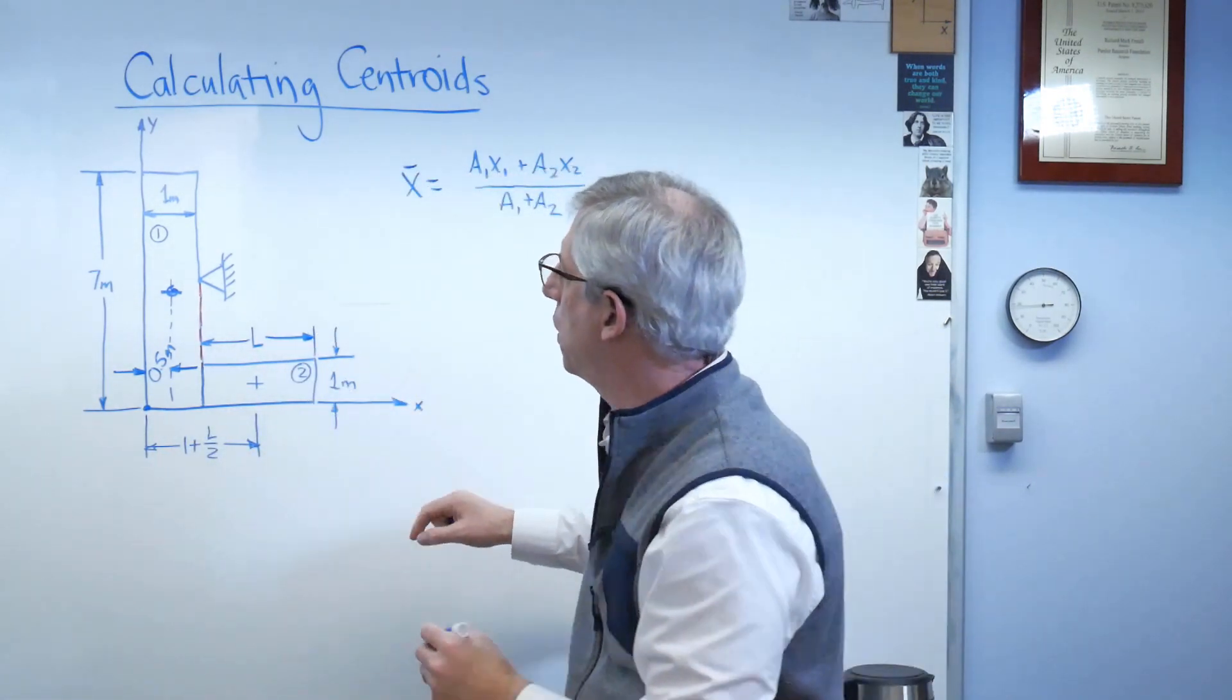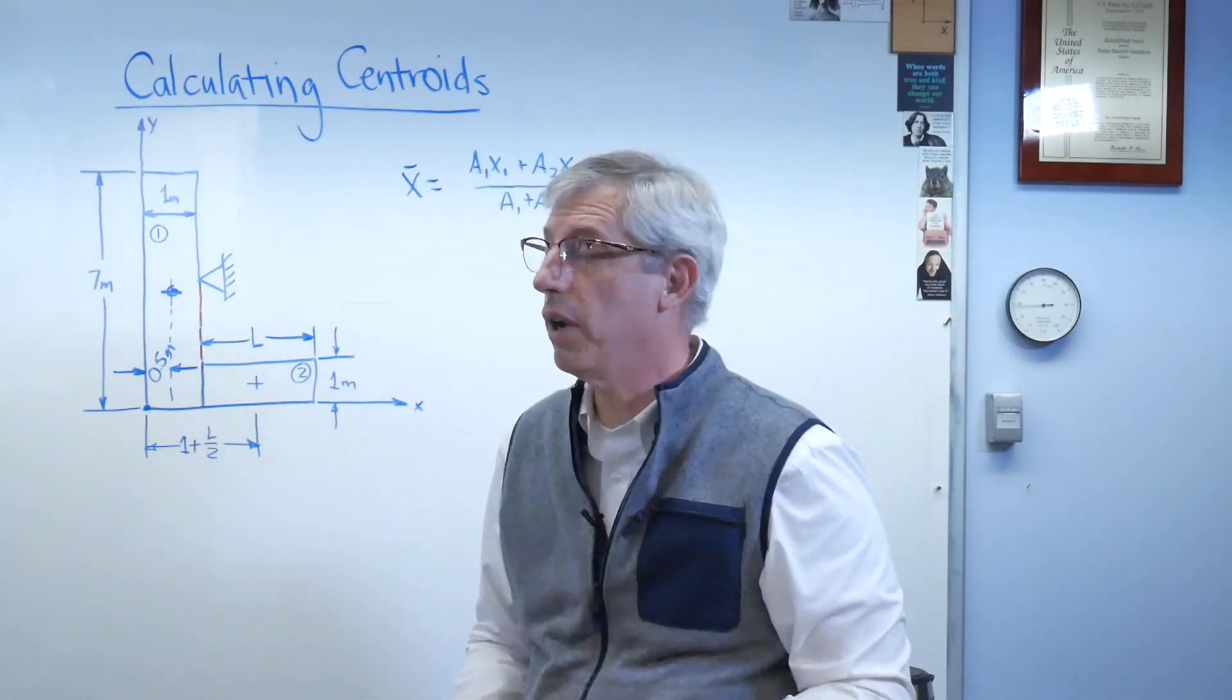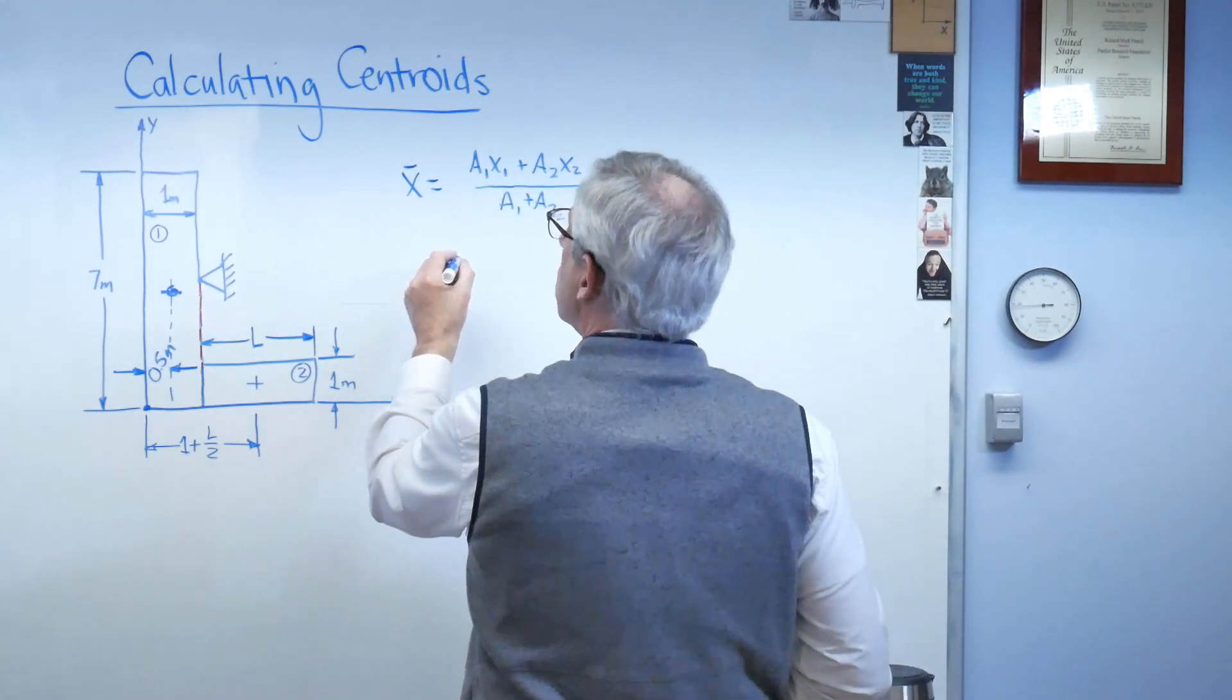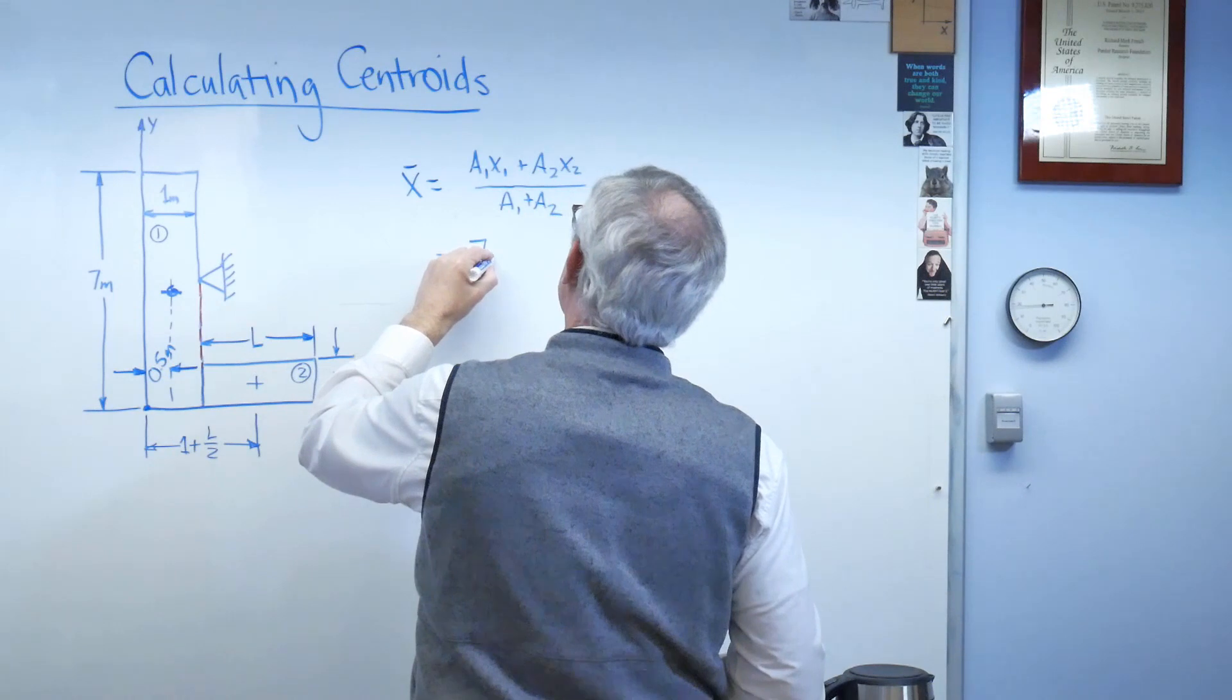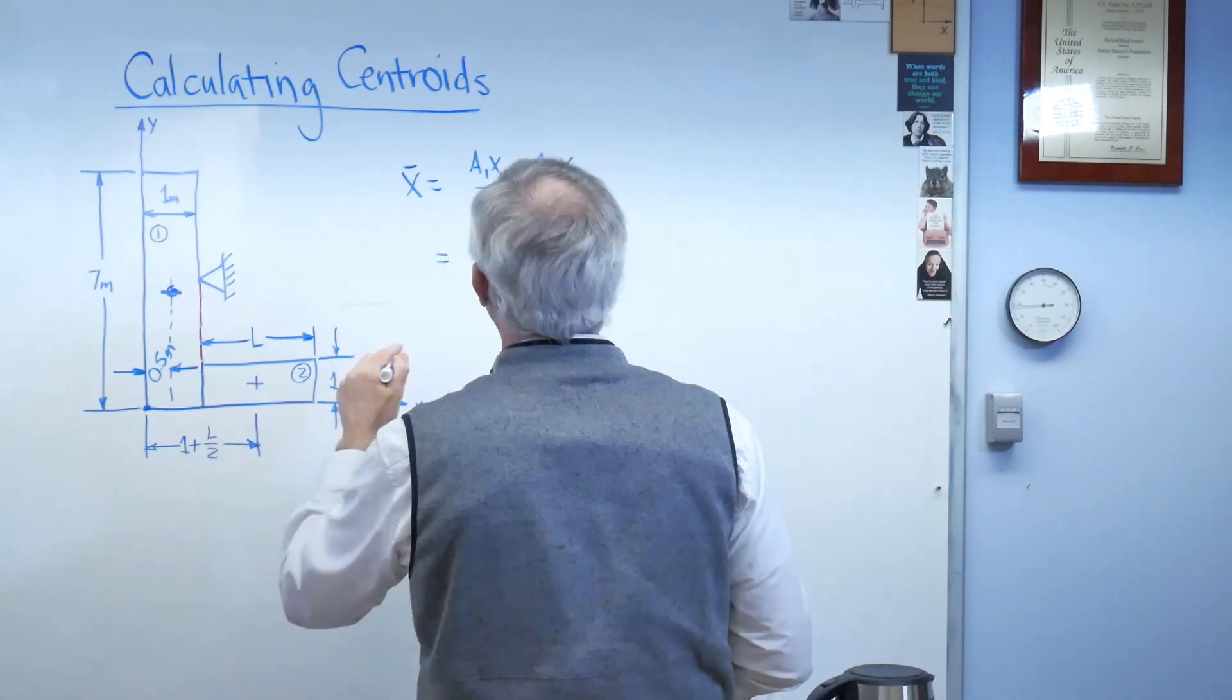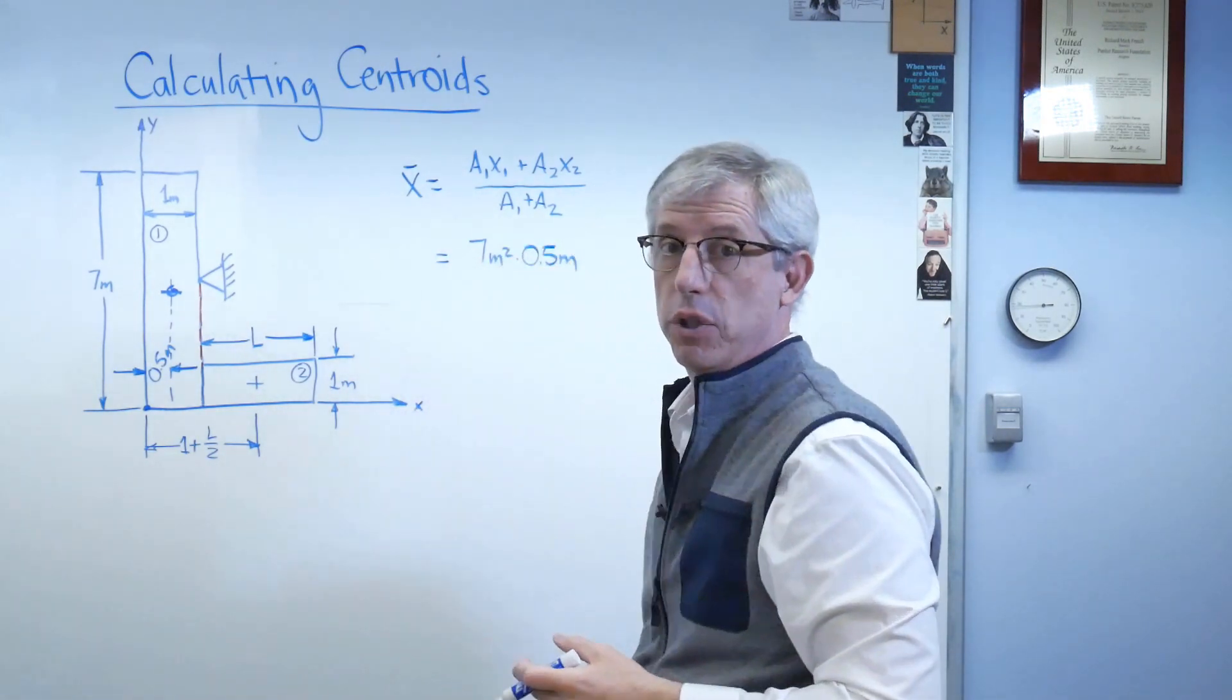So that's 1 plus l over 2 right there, and I don't know what l is. We'll figure that out, but let's just go ahead and plug everything in here. So a1 is 7 times 1, so it's 7 meters squared. A1 times x1. x1 is 0.5 meters. So far, so good.